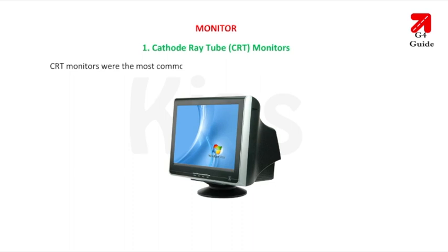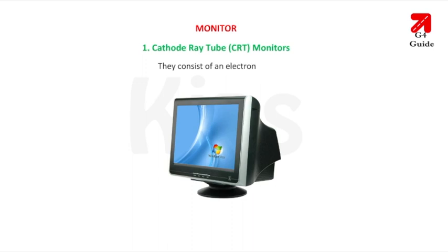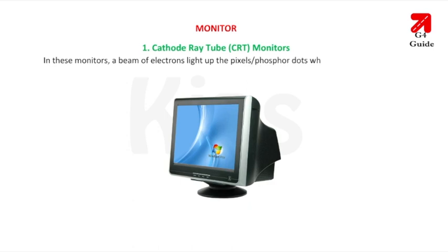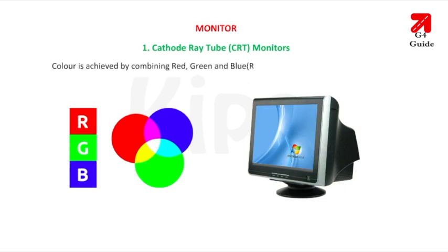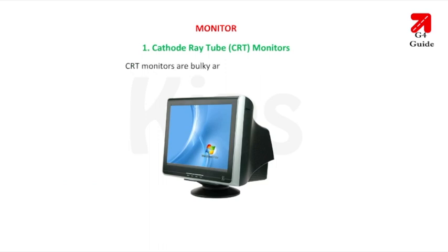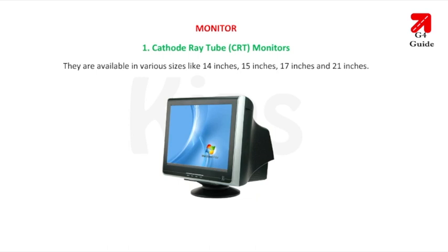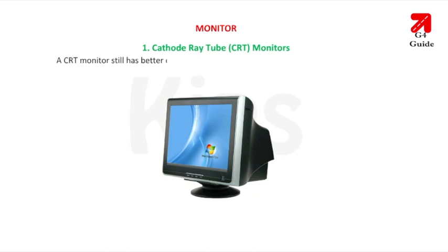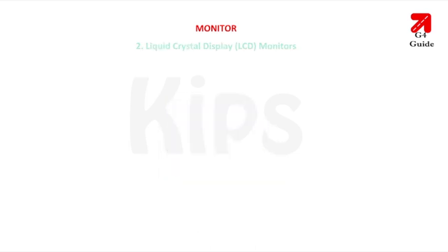CRT monitors were the most common monitors until flat panel screens became affordable. They consist of an electron gun. The beam of electrons lights up the pixels or phosphor dots which form the inner coating of the screen. Color is achieved by combining red, green and blue (RGB) shades of different densities. They are available in various sizes like 14, 15, 17 and 21 inches. A CRT monitor still has better contrast ratios and viewing angles than any other type of computer monitor.